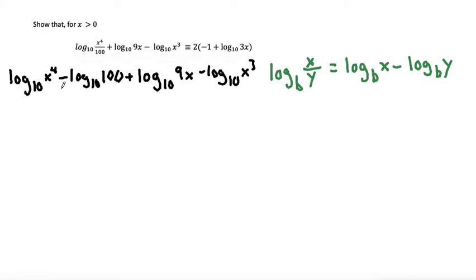Okay, so from here, let's see what else we can do to simplify. Here we have a log base 10 of x to the power of 4, and we have minus a log base 10 of x to the power of 3. So using this rule in reverse,